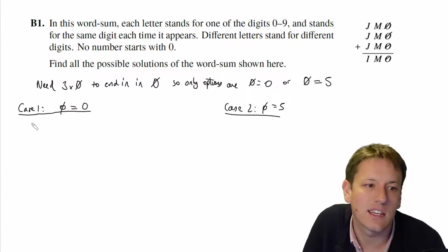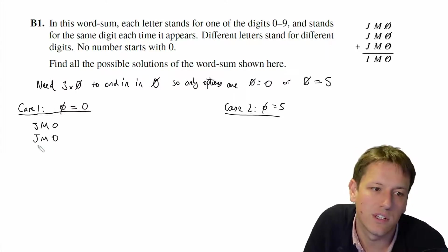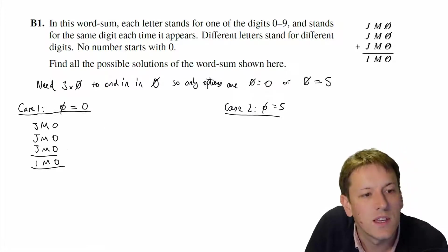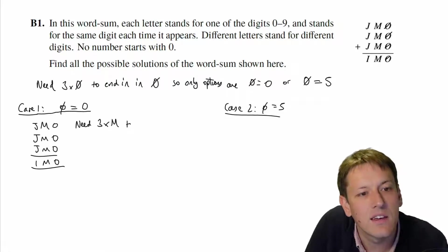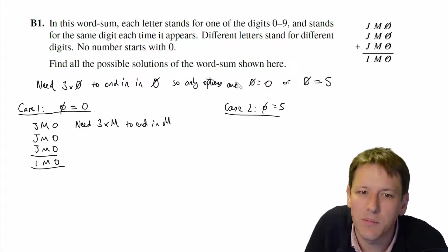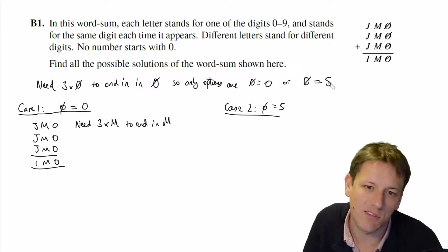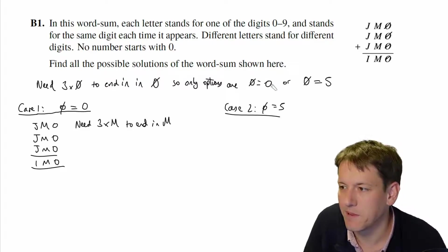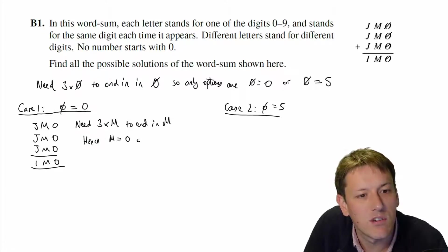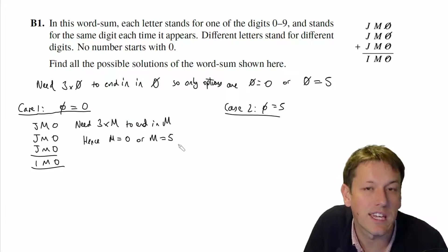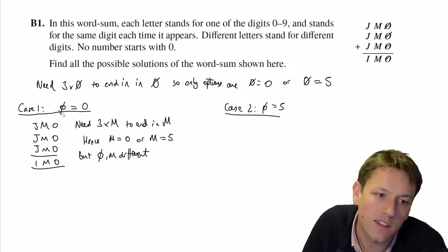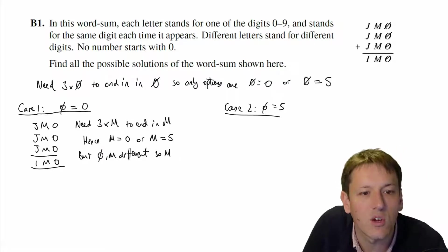In Case 1, the word sum becomes JM0 + JM0 + JM0 = IM0, with no carrying into the second column. So we need three times M to end in M. For exactly the same reason as before, we must have either M equals zero or M equals five. But O and M are different digits, and in this case we've already taken O to be zero, so M can't be zero.